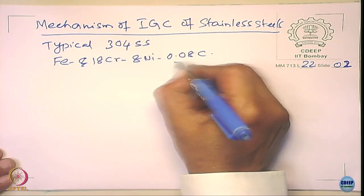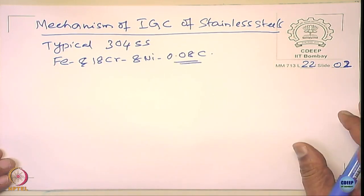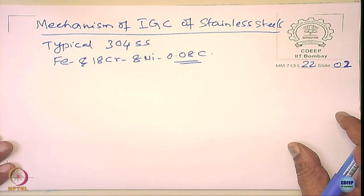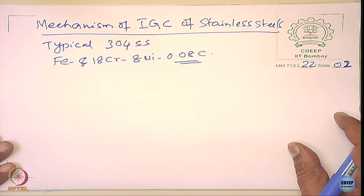The carbon is supersaturated. In the solution-annealed condition — also called mill-annealed condition — you raise the temperature of the stainless steel sheet or plate to about 1050°C where the carbon is highly soluble, then quench it rapidly so that the carbon is retained in solid solution.